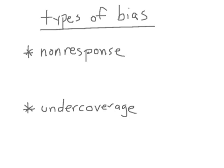I'd like to give you a few vocabulary words that are basically types of bias. These are certainly not the only types of bias, and we can see how bias comes up in lots of different ways. Sometimes it just takes a sentence to explain why something is biased. The first kind of bias is something called non-response — this is when individuals in part of your sample just don't respond.